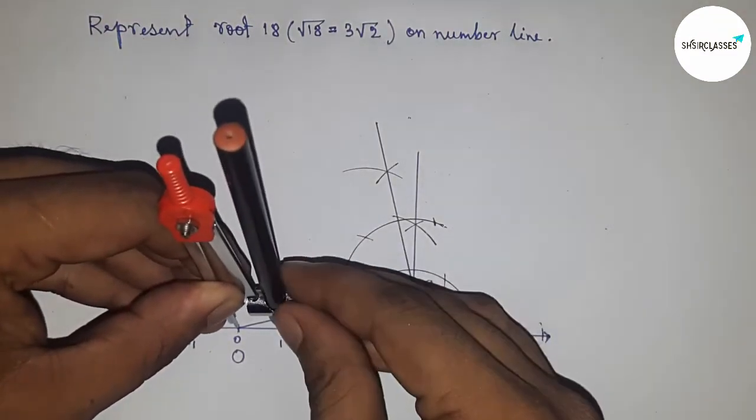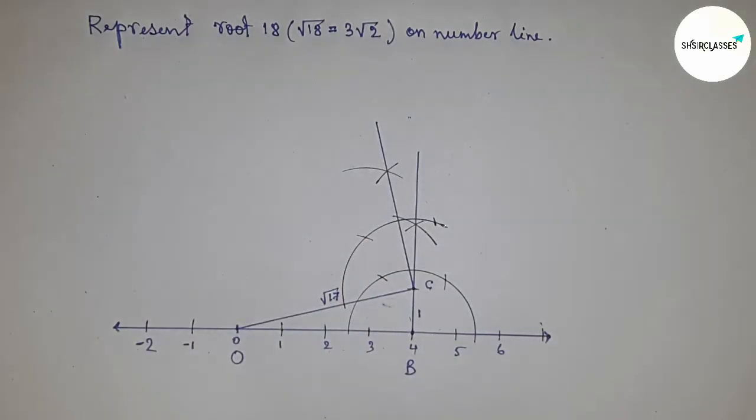Putting the compass here and cut here. This is point D, and this is one unit length.